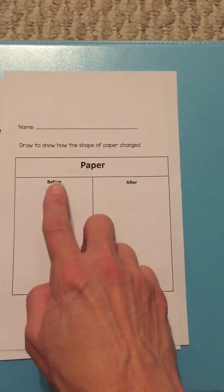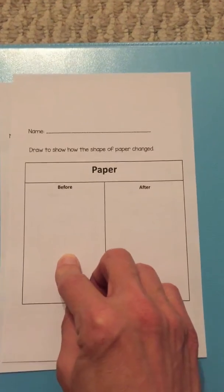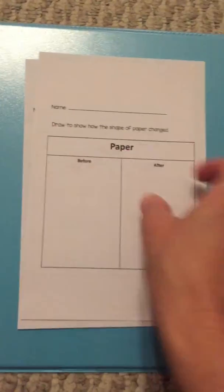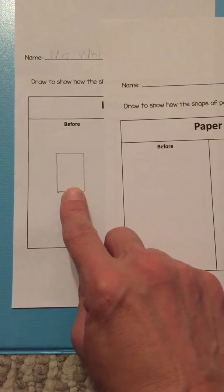Right here, you're going to draw a picture of what your paper looks like. Mine looks like a rectangle, it has four sides and four corners. So I drew my paper right here.